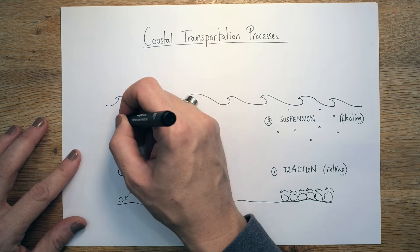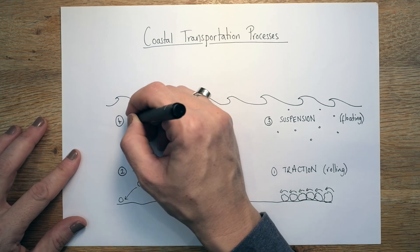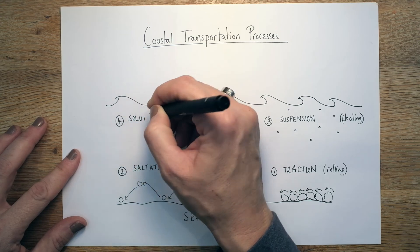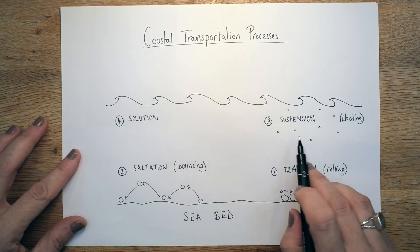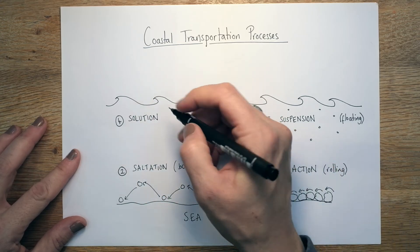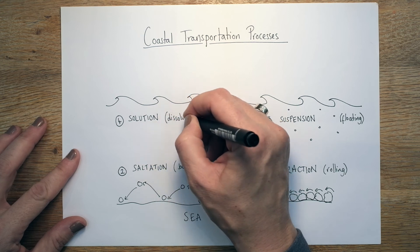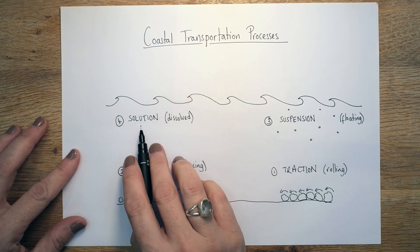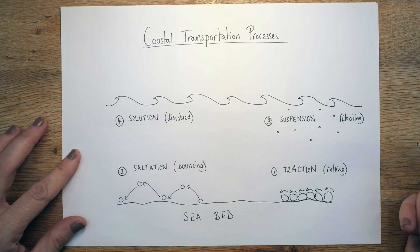And then the final one, which is one you probably won't have thought of, but this is solution. So when they're even smaller than these floating suspended particles, when they're actually dissolved into the actual sea water itself, that's called solution. They become part of the solution of the sea.